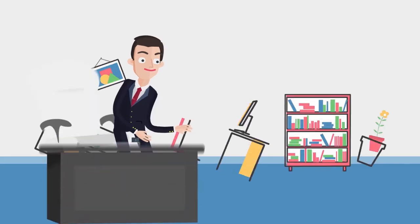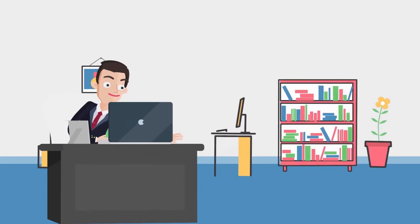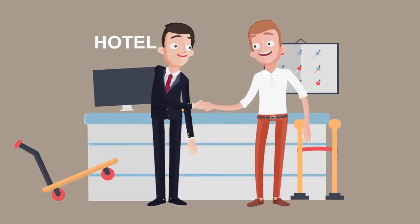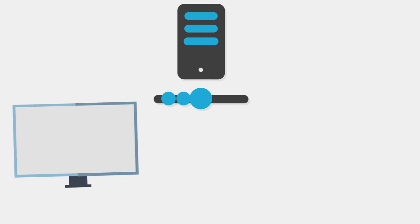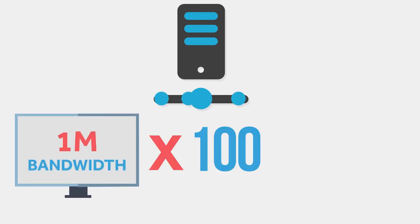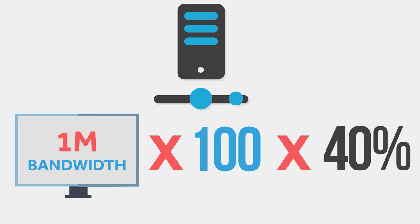Andy is an IT manager of a 100-room hotel. Life used to be easier for Andy — he was always able to keep his guests happy by having enough bandwidth. He wanted each guest to have 1 megabyte of bandwidth, so he multiplied that by 100 rooms, and assuming that at any one time only 40% of them were actively surfing or downloading, he just needed to provision 40 megabytes in total bandwidth. It was simple.